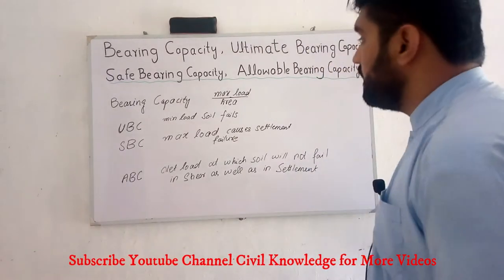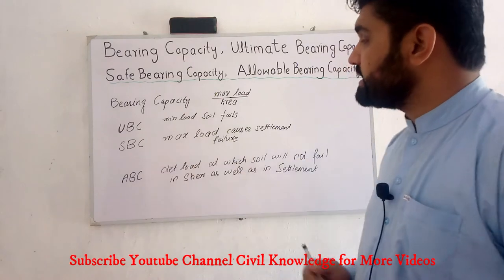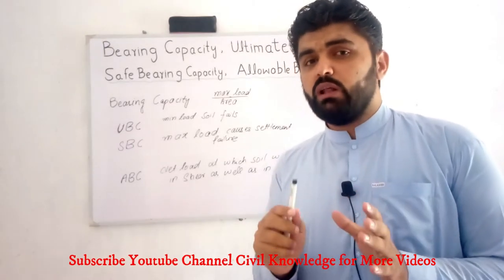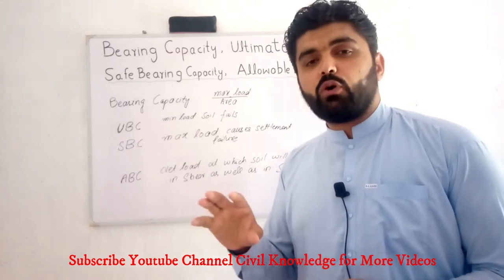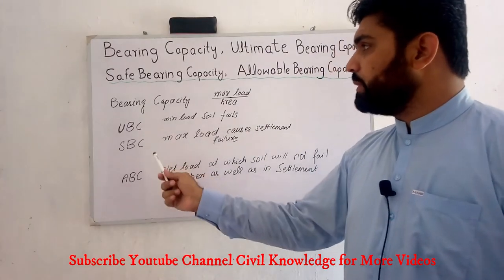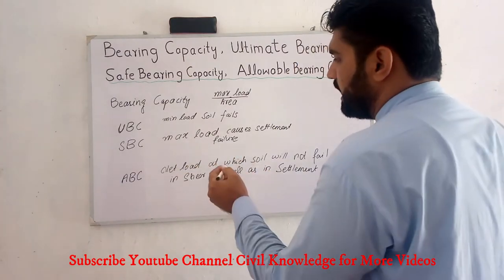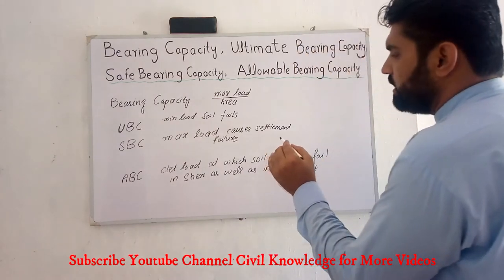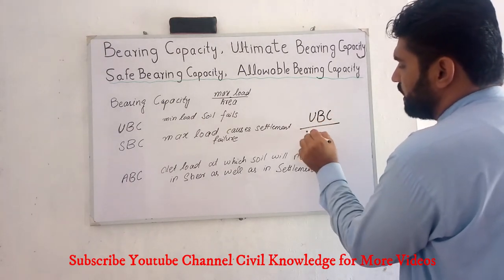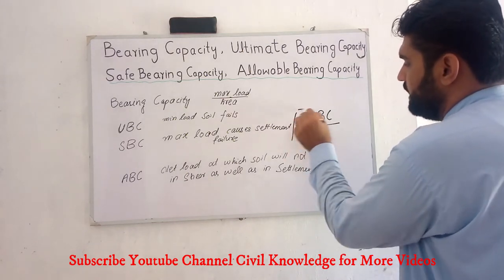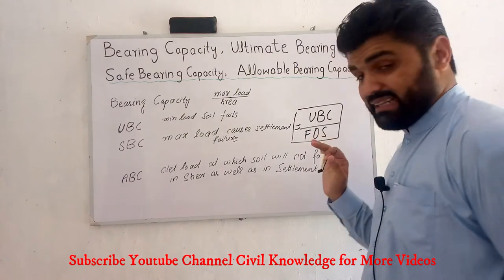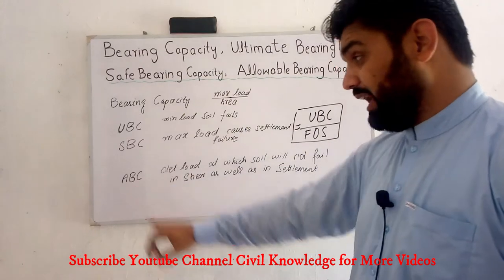The next one is safe bearing capacity. Safe bearing capacity is the maximum load at which the soil will fail in settlement, not in shear, just in settlement. We can find the safe bearing capacity by dividing the ultimate bearing capacity of the soil by a suitable factor of safety.